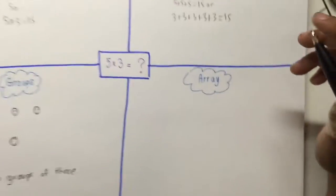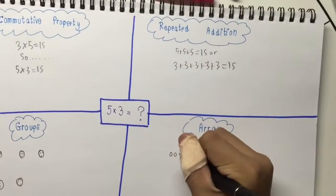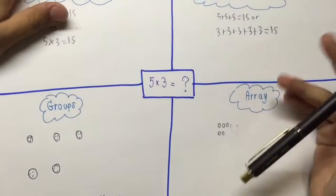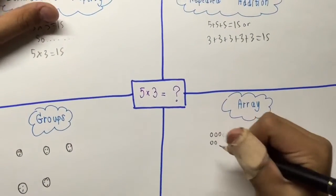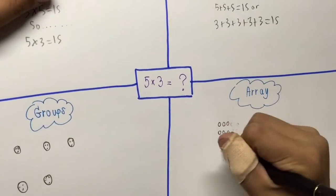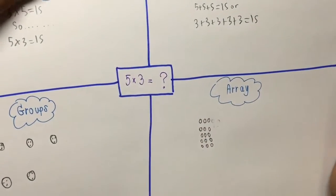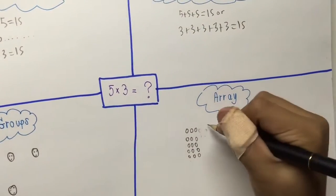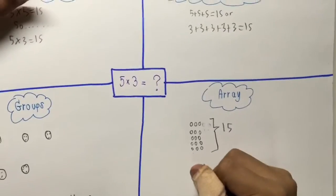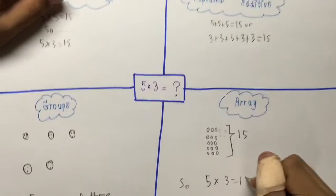Then we go to the array. This is the first array — 3 groups of 5, and 5 groups of 3. There are 5 groups and 3 in each group, so all together equals 15. So 5 times 3 equals 15.